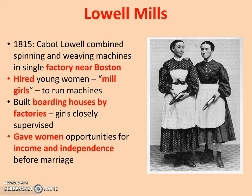Later on, we see the building of Lowell Mills. In 1815, Cabot Lowell had the idea of bringing the spinning machines and the weaving machines into a single factory near Boston. Just like Slater, he hired young women — history calls them the Mill Girls — to run these machines. He also built boarding houses by the factories because many of these young women were away from home for the first time. They ranged in age from early teenagers, 13 or 14 years old, to young women in their late 20s and early 30s. This created an industrial model in which the workers lived by the factory, and the factory controlled their daily lives — when they ate, when they slept, making sure they got to work.